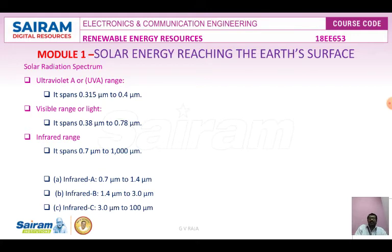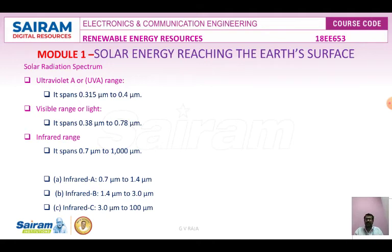The infrared range spans from 0.7 micrometer to 1000 micrometers and is responsible for an important part of the electromagnetic radiation reaching the Earth. It is further classified into three types: Infrared A (0.7 to 1.4 micrometer), Infrared B (1.4 to 3 micrometer), and Infrared C (3 to 100 micrometer).